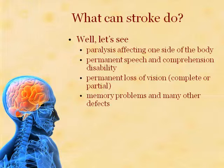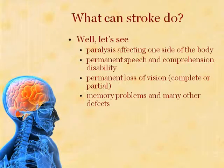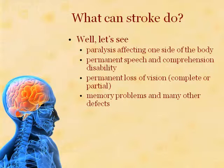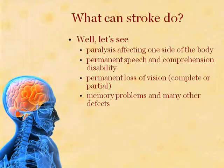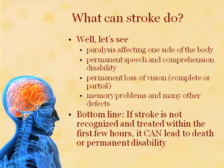So what exactly can stroke do? Unfortunately, stroke is a very significant event in a person's life and symptoms have to be taken extremely seriously. Stroke can lead to complete paralysis or weakness affecting one side of the body. It can cause permanent speech and comprehension disability. Also, blindness — complete or partial — can result from a stroke. Memory problems can also appear from having a stroke. There are many other types of defects depending upon the portion of the brain involved. If stroke is not recognized and treated within the first few hours, it can lead to death or permanent disability.